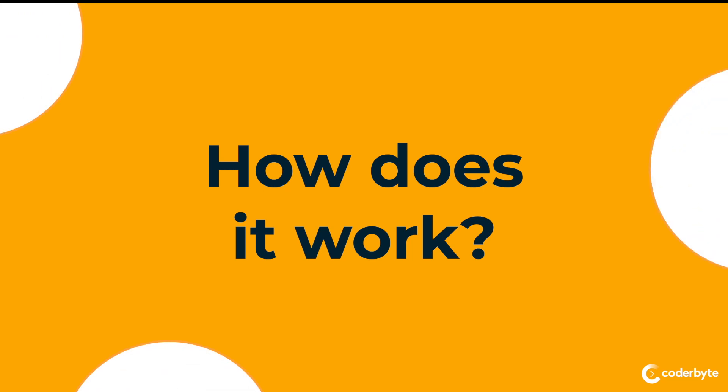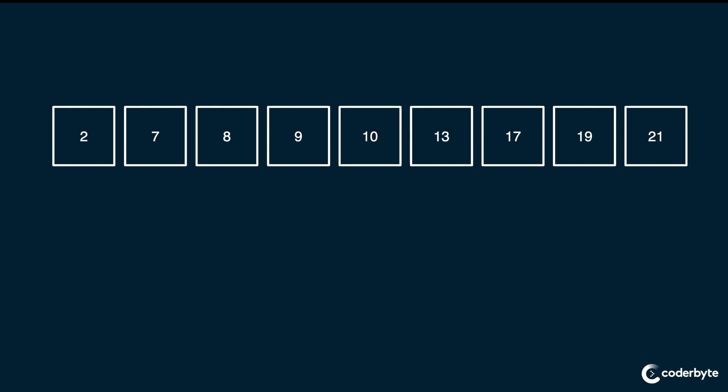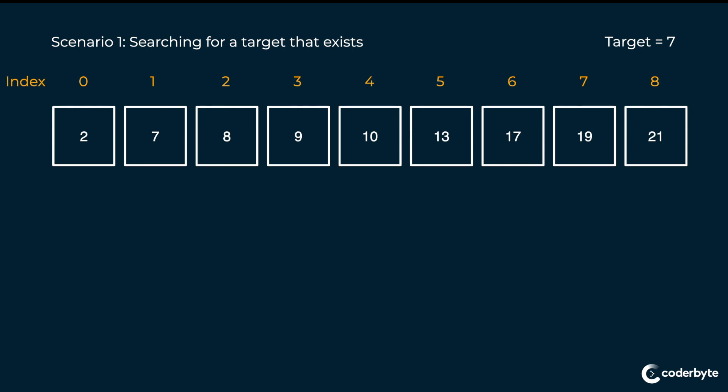How does binary search work? Let's dive into an example with an array of numbers to pseudocode how it actually works. We are given an array of nine sorted numbers with indices from zero to eight. We also have a target of seven that we are searching for, which does exist in the array. It is important to note that binary search only works with a sorted collection of things.